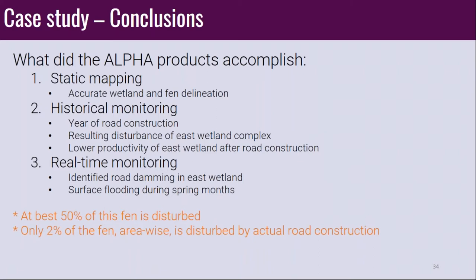Addressing a comment on the case study: pre-construction data is limited because good Landsat data only goes back to 1984, and the road was built in 1992, leaving little pre-construction time. On whether the road was surveyed near a topographic change to avoid peat: looking at the topography it appears to be a flat fen with the road built directly on it, though historical imagery would be needed to confirm. It does appear to have affected the hydrology of the fen.